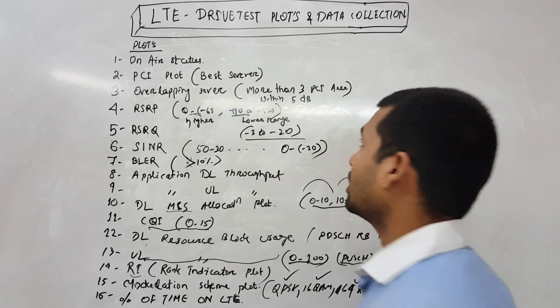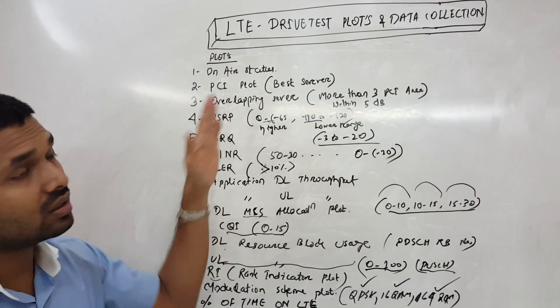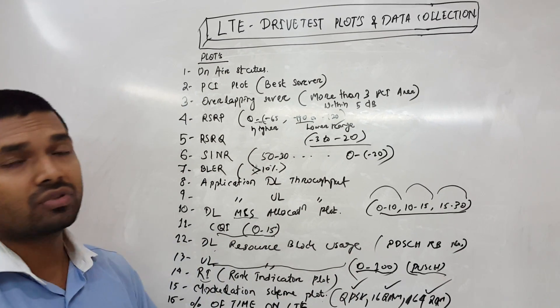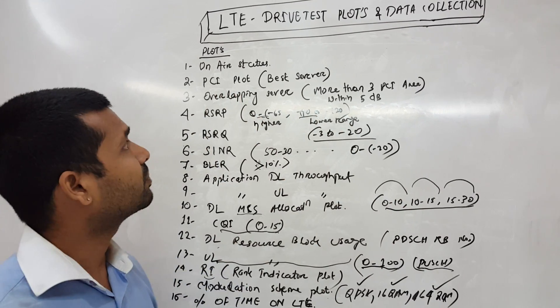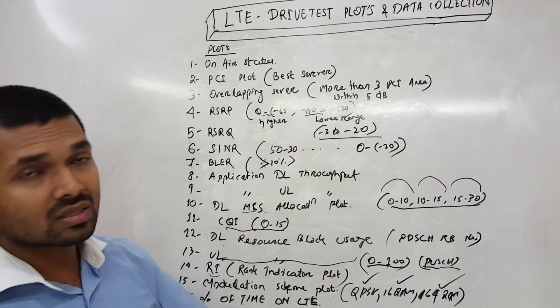On-air status: we should have a plot of on-air status. That means we'll collect, let's say 100 sites are there and out of which 90 or 95 are on air. Then moving forward, we should have PCI plot - physical cell identities - it should be scanner based.